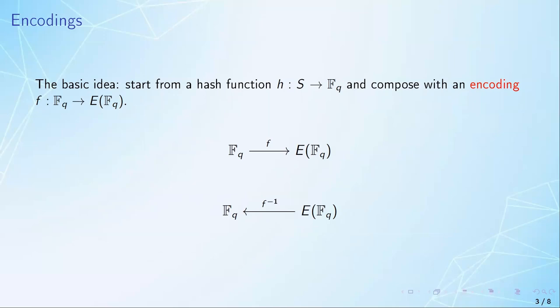We have the forward direction from the field to the curve, and then we also assume that we have a function in the inverse direction from the curve to the field. Usually the function is not one-to-one, so the inverse is allowed to return any one of the possible pre-images at random.